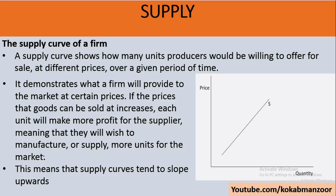Next is supply. So far we discussed a lot about demand; now we'll discuss supply. Supply means how many units a producer is willing and able to supply at different prices over a period of time. For example, a producer wants to sell 10 units at price 1 and 12 units at price 2 — that is called supply. It is a straight positive line sloping upwards from left to right.